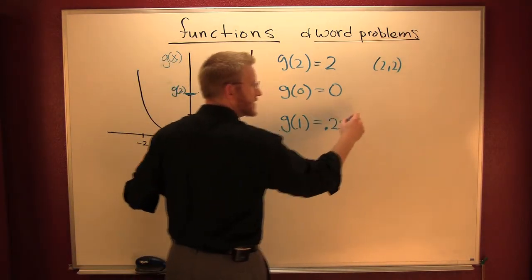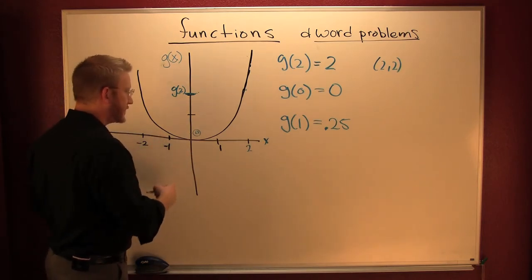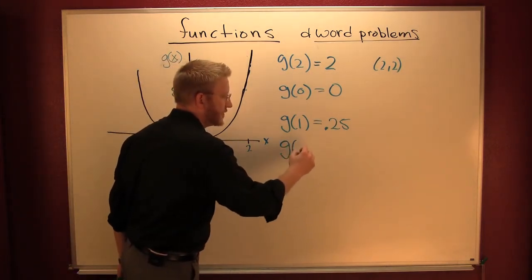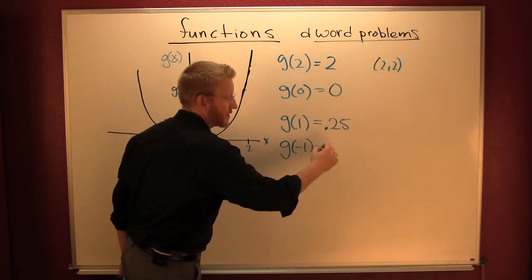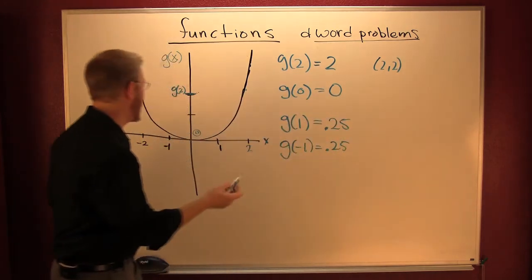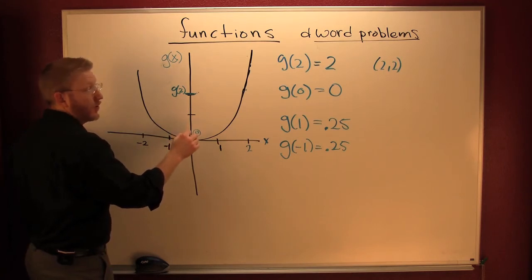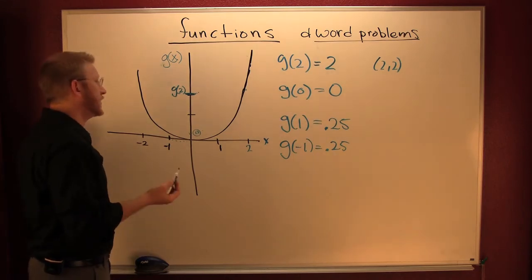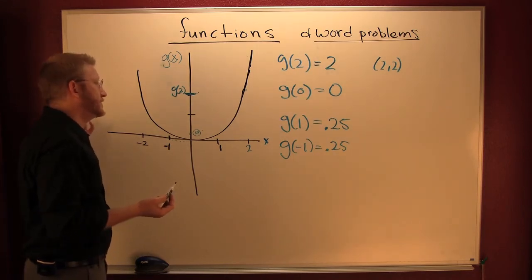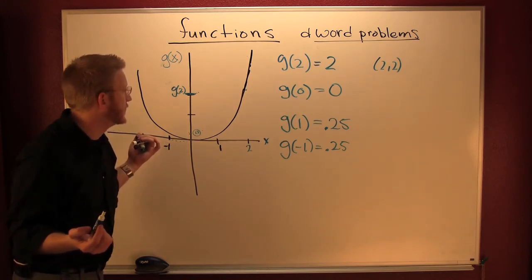G of minus one is also 0.25. How'd I get that? I went over to minus one and then I went up here and looked at the y value, or the G value. It happens to be that same quarter.